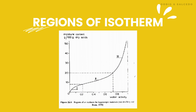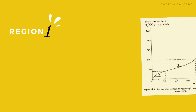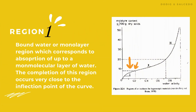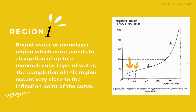Isotherms also have regions, and with focus on the types mostly found in foods, the regions are divided into three. For Region 1, the bound water or monolayer region, which corresponds to absorption of up to a monomolecular layer of water, the completion of this region occurs very close to the inflection point of the curve. In this region, water activity and moisture content are both low.